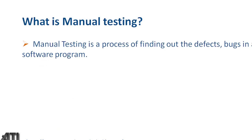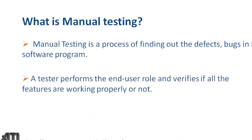We'll discuss defects, bugs, and errors in detail in a separate video. For now, understand that if something is not working as expected, it is called a defect. Manual testing is the process of finding out defects and bugs in a software program — this is one definition of manual testing.